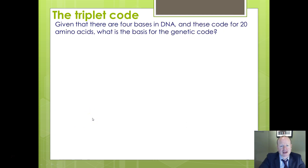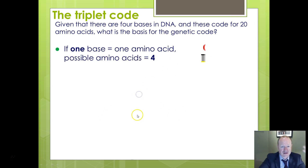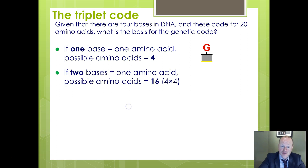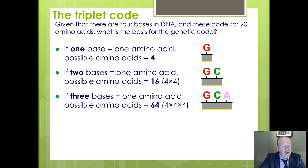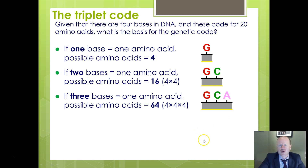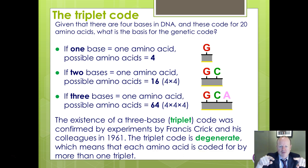DNA uses what we call a triplet code. There are 20 amino acids that need to be coded for. With only four bases — A, C, G and T — if you have one letter per amino acid, that's only four possible combinations, not enough. With two bases per amino acid you still only get 16 combinations. But with three bases, four by four by four gives 64 possible combinations — sufficient for 20 amino acids plus some overlap. This is why the code is described as degenerate: there can be more than one triplet code for the same amino acid.